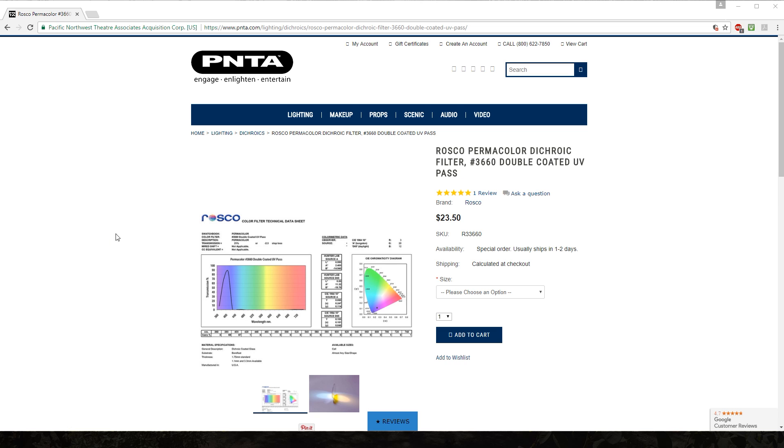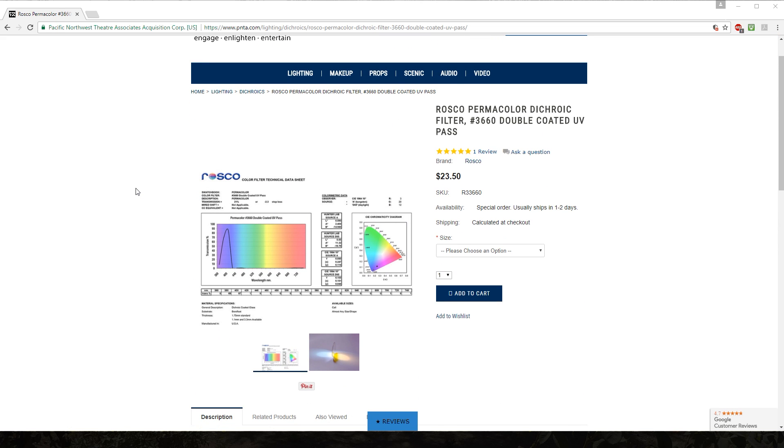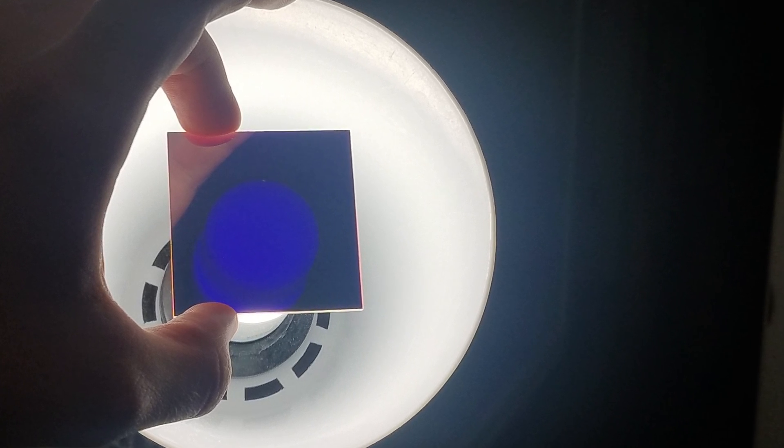The filter we'll be using is a Roscoe Dichroic filter. It's double coated and allows about 85% transmission from 385 to about 410 nanometers in wavelength. Pretty much all visible light is reflected on it, which is why it looks pretty much like a mirror. However, ultraviolet light is able to pass through the filter.